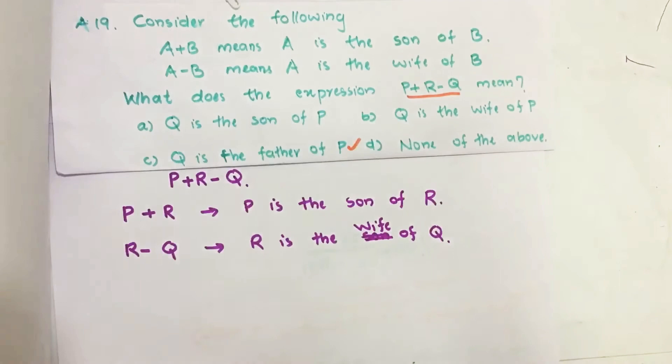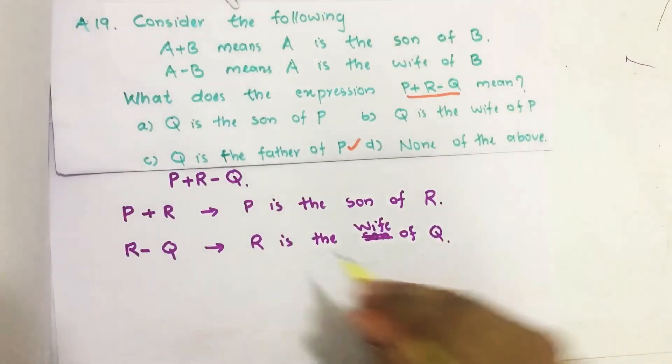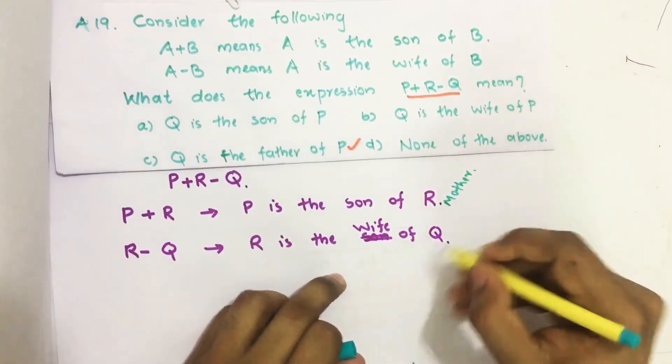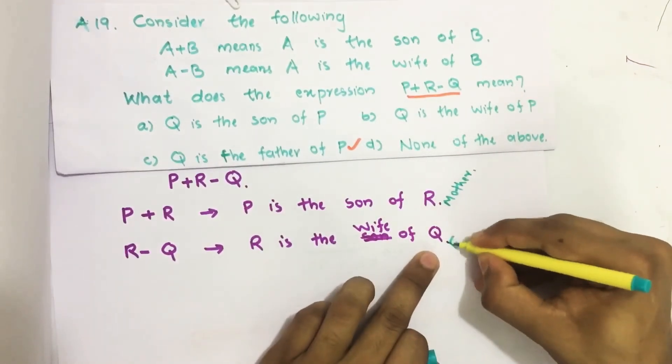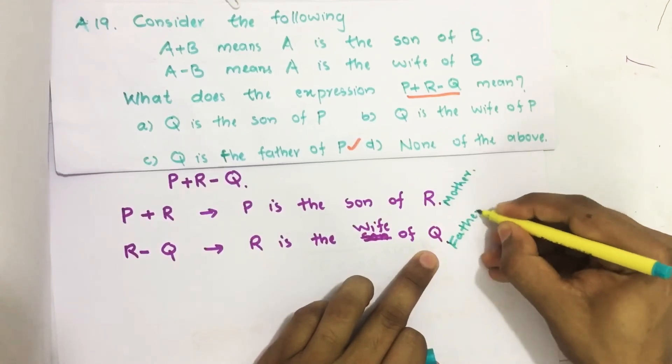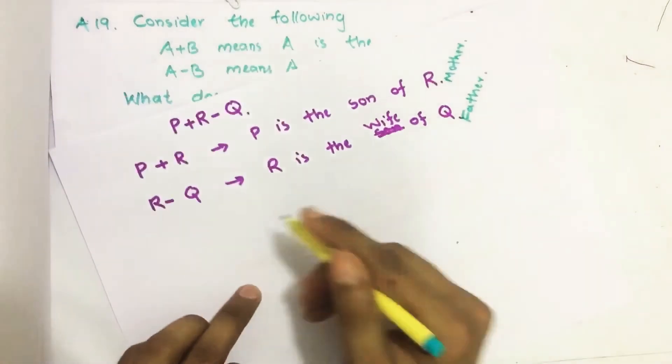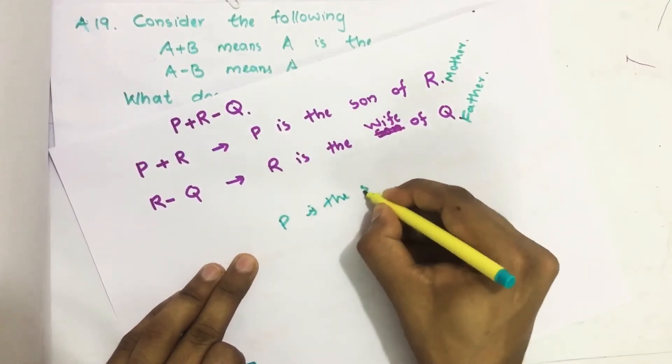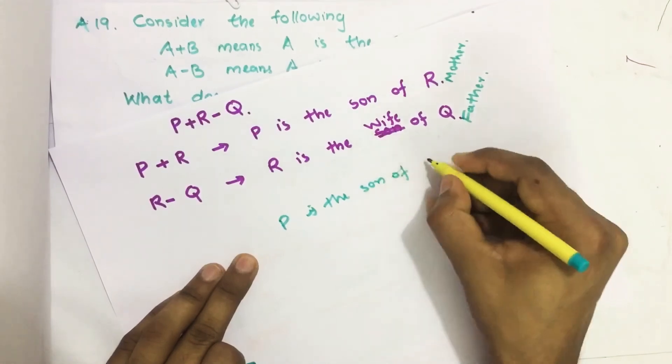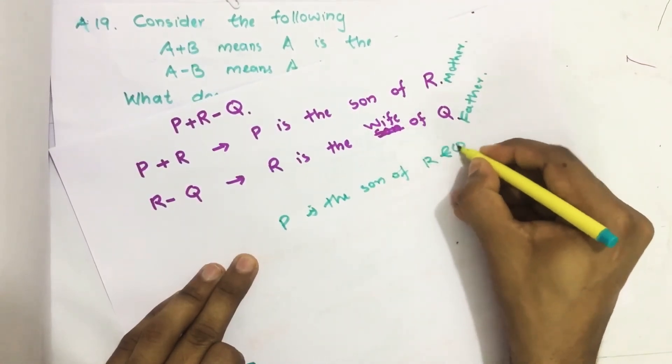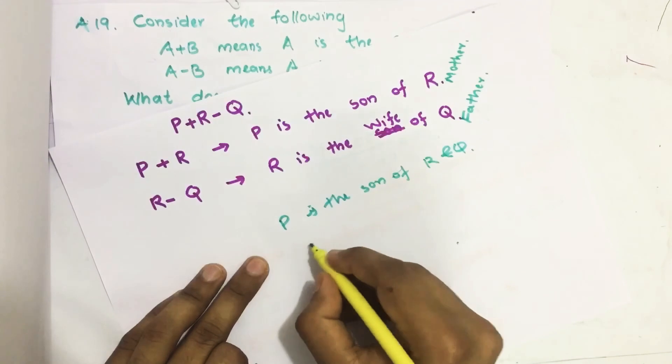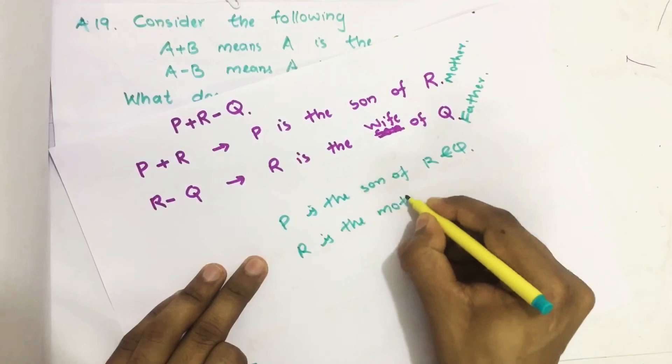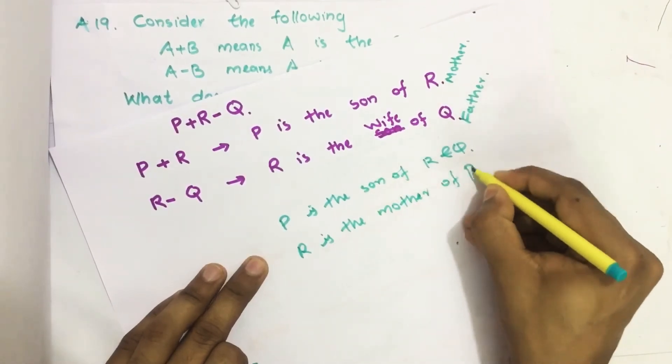That means P is the son of R, so R is the mother. Then Q is the father. Therefore, we can write P is the son of R and Q, where R is the mother of P.